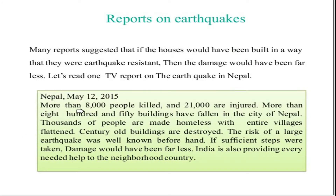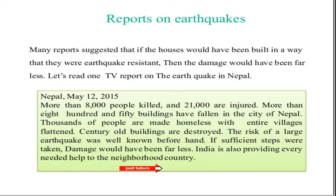There was a report published regarding the earthquake in Nepal on May 12, 2015. More than 8,000 people were killed and 21,000 were injured. More than 850 buildings fell in Nepal. Thousands of people were made homeless, entire villages were flattened, and century-old buildings were destroyed. India also provided every needed help to the neighboring country. This is the format of a report published about the earthquake.